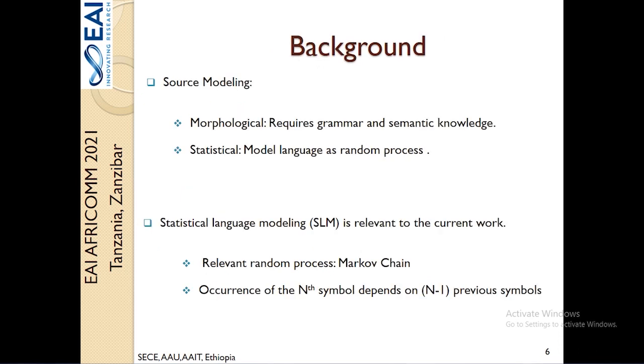In terms of source modeling, you can have two possibilities for natural language: morphological models and statistical models. A morphological model requires you to have a better understanding of the grammar and semantics of the language, whereas a statistical model only requires you to have the statistics or probabilities of symbols of the language. But that's not the only thing you need for statistical language models - you need to have a proper model. In this regard, most literature proposes to model natural languages as Markovian chains.